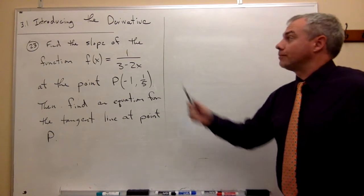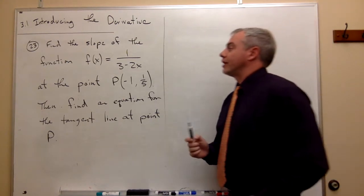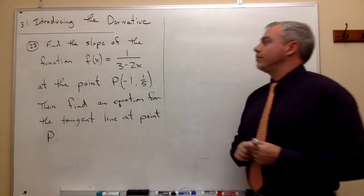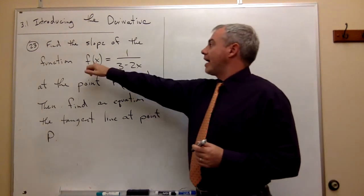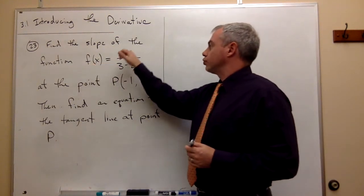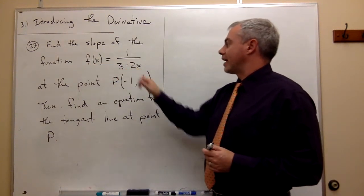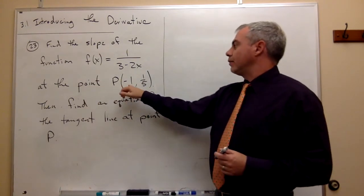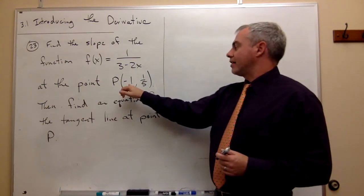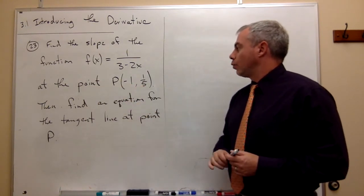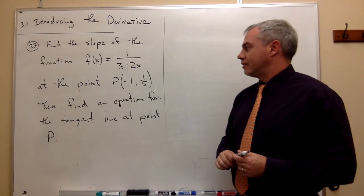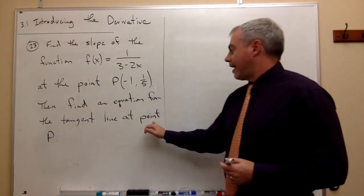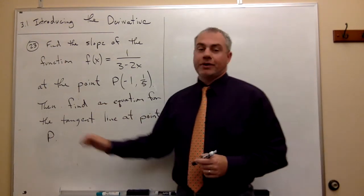Now let's take a look at problem number 23. We want to find the slope of the function f of x equals 1 over 3 minus 2x at the point P, which is located at negative 1, one fifth. Then we'd like to find an equation for the tangent line at the point P.